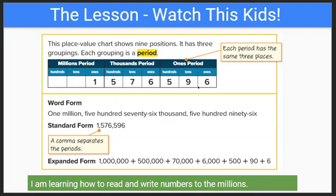So let's do that. One, two, three — there's a comma right there. One, two, three — there's a comma right there, and those commas separate the different periods. We have the millions period, the thousands period, and the ones period shown here. You could have the billions period and the trillions period and so on, but we're just working up to the millions in fourth grade.